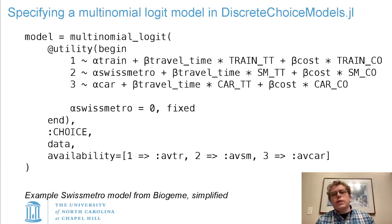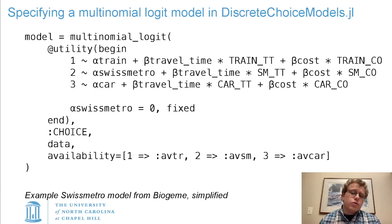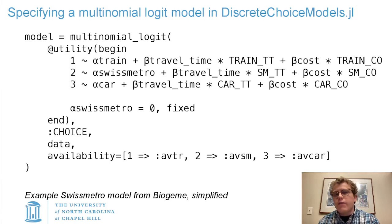As I mentioned, I wanted the model specification in Julia to look very similar to the model specification in math, and I think I've done a fairly good job of that. You can see here constructing a multinomial logit model using the utility macro and Julia's metaprogramming capabilities to create a domain-specific language. We've defined each of these utility functions, and on the left-hand side of the tilde are the actual values for each choice in the data frame. Those don't have to be numeric — they could be strings or whatever.